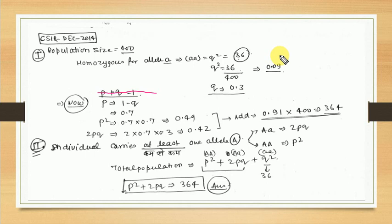If q² is 0.09, then q equals the square root of 0.09, which is 0.3. Then, you know that Hardy-Weinberg's principle states p plus q equals 1 — the allelic frequency values sum to 1. Therefore p equals 1 minus q, so substituting q equals 0.3 gives us p.